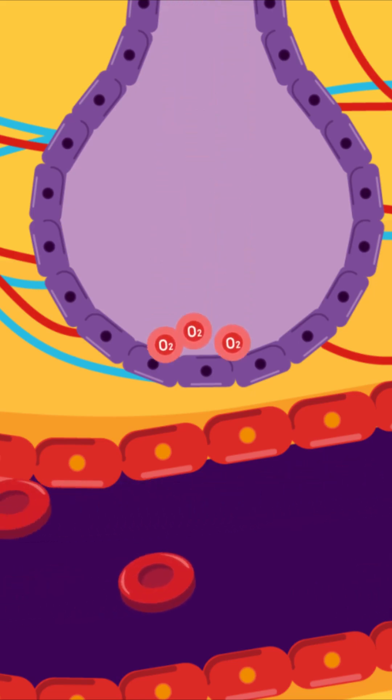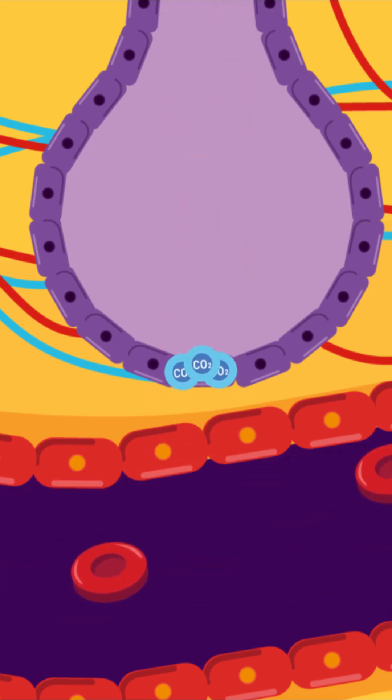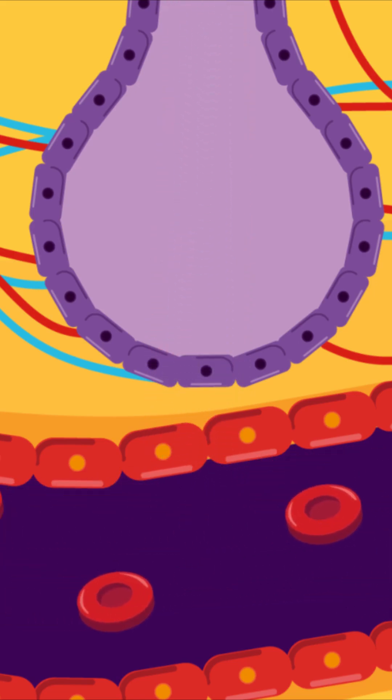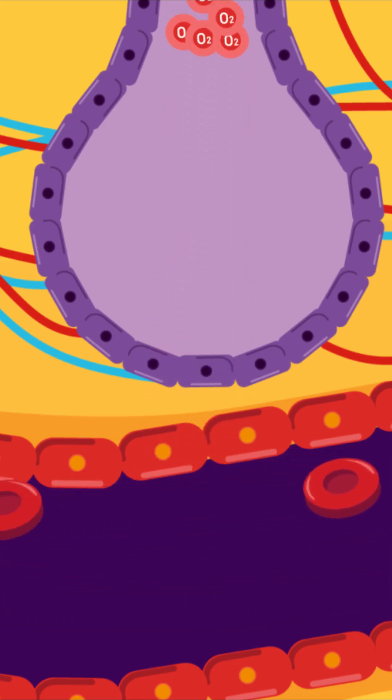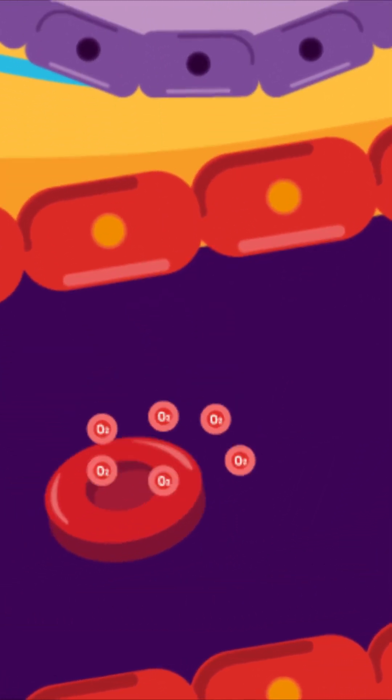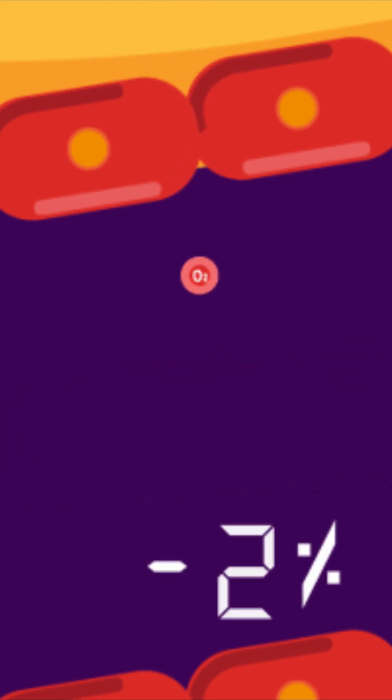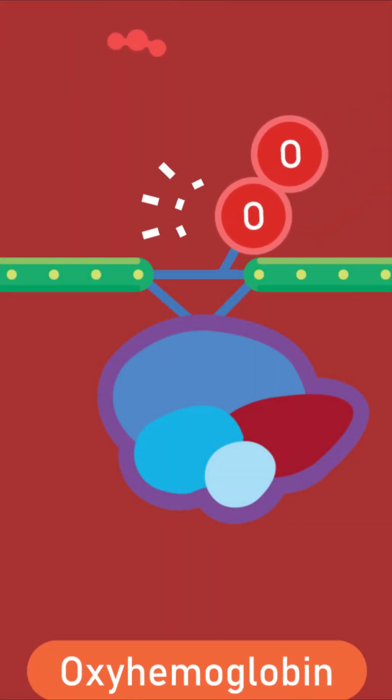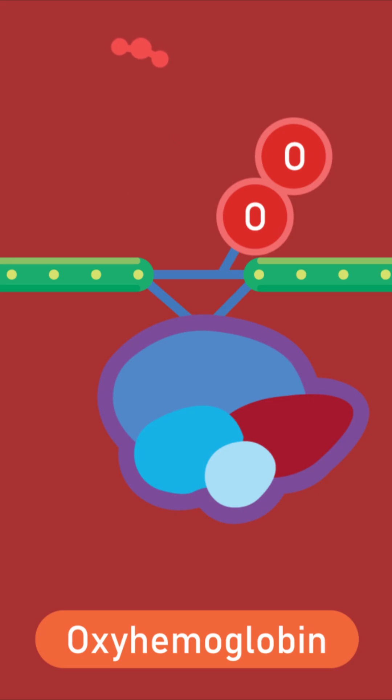During inspiration, oxygen diffuses across the alveoli and enters into the bloodstream. Around 2% enters the plasma, while 98% combines with red blood cells to form oxyhaemoglobin.